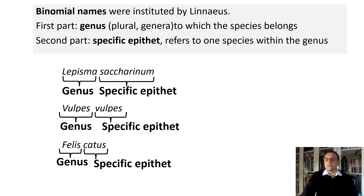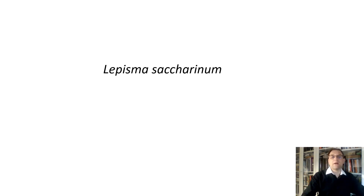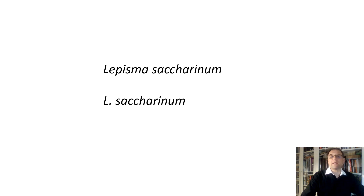Here is another rule in taxonomy: if you mention a species name for the first time in a paper, you write both genus and specific epithet — for example, Lepisma saccharinum. If you mention it a second time, you write only the first capital letter of the genus followed by a period, then the whole specific epithet: L. saccharinum.